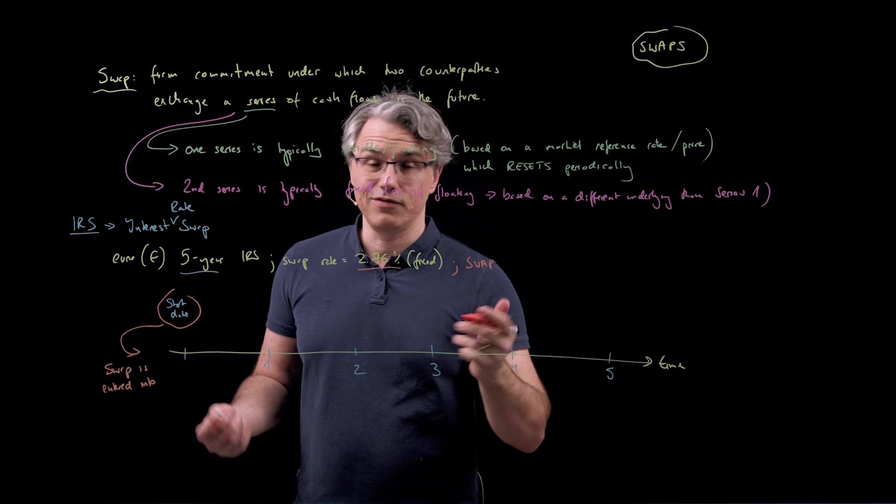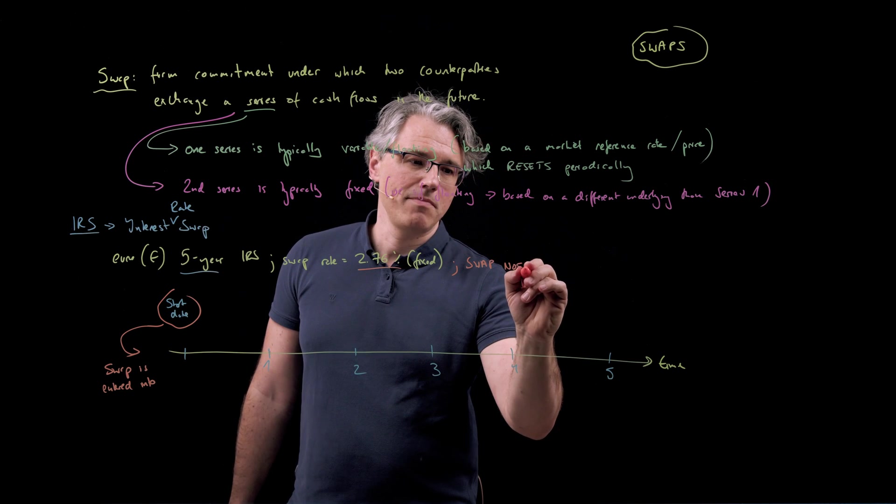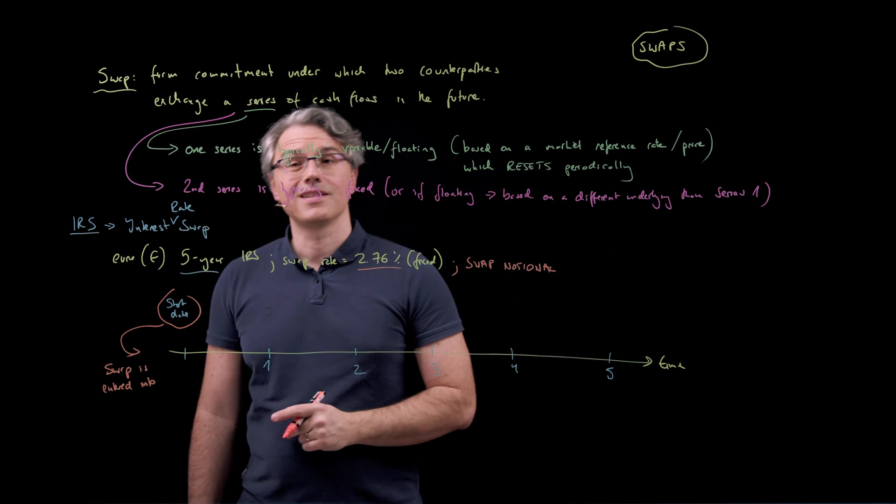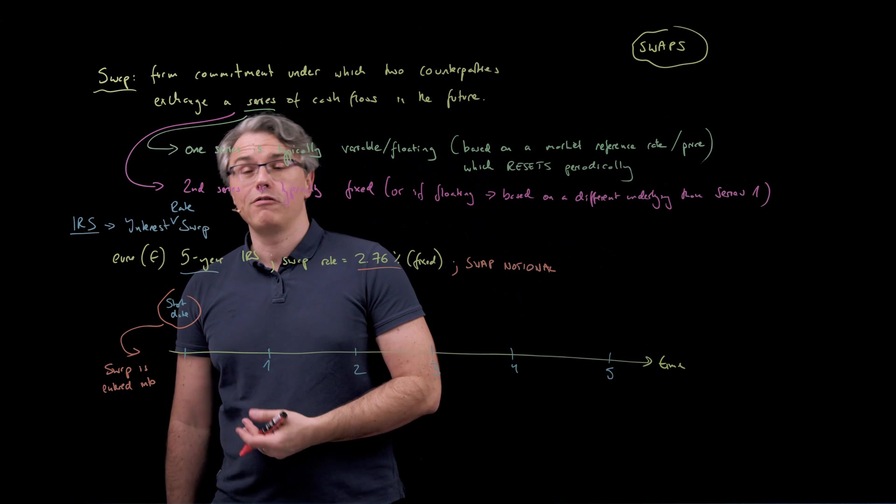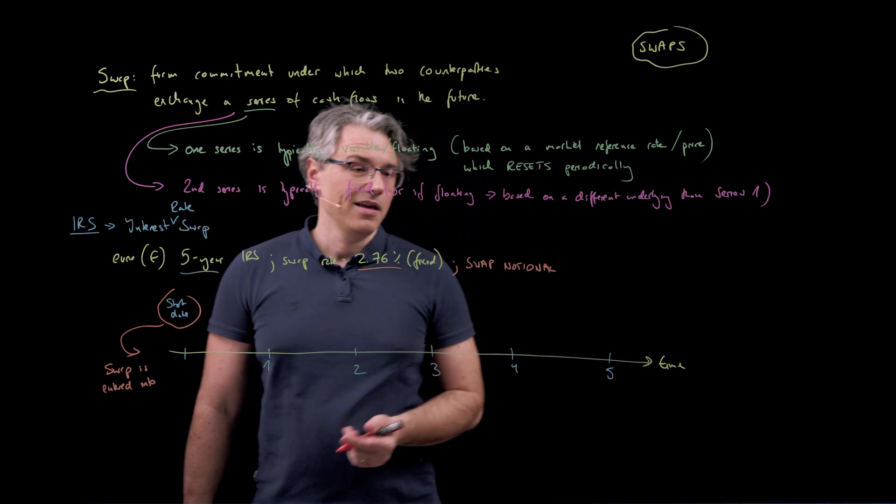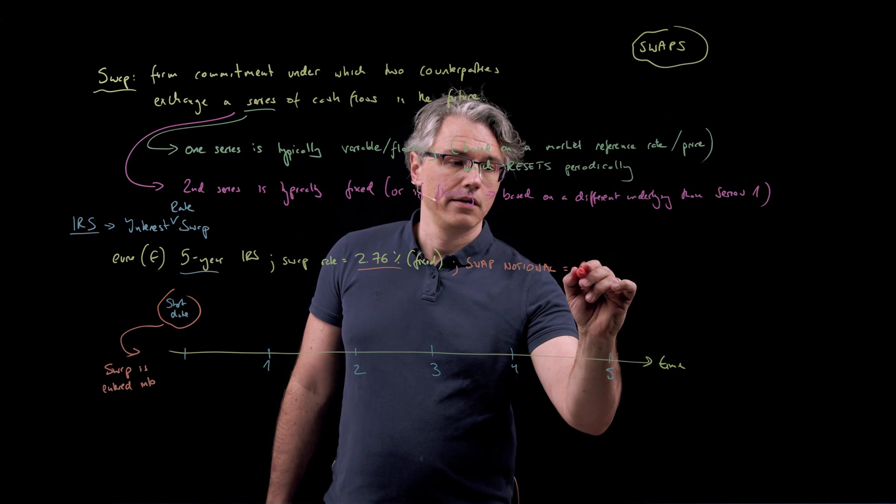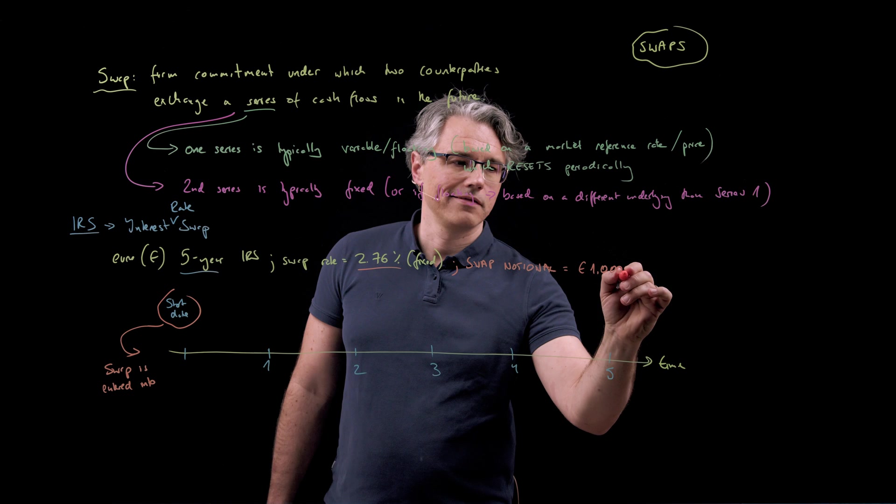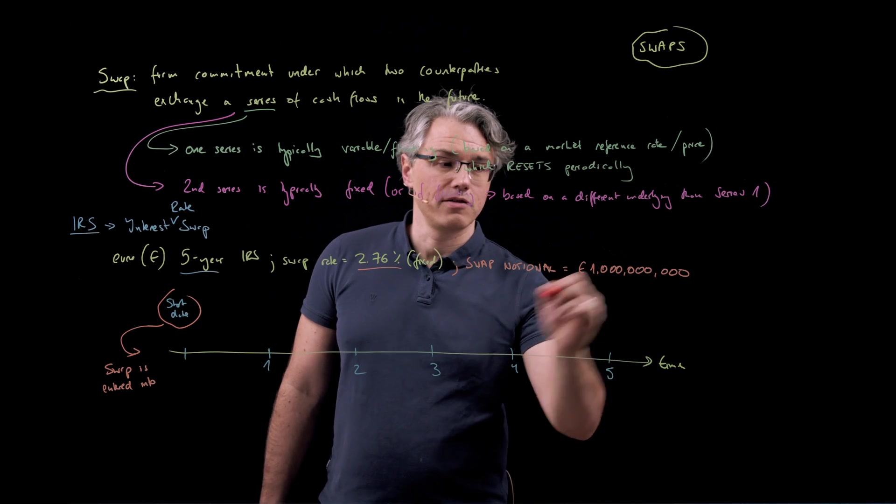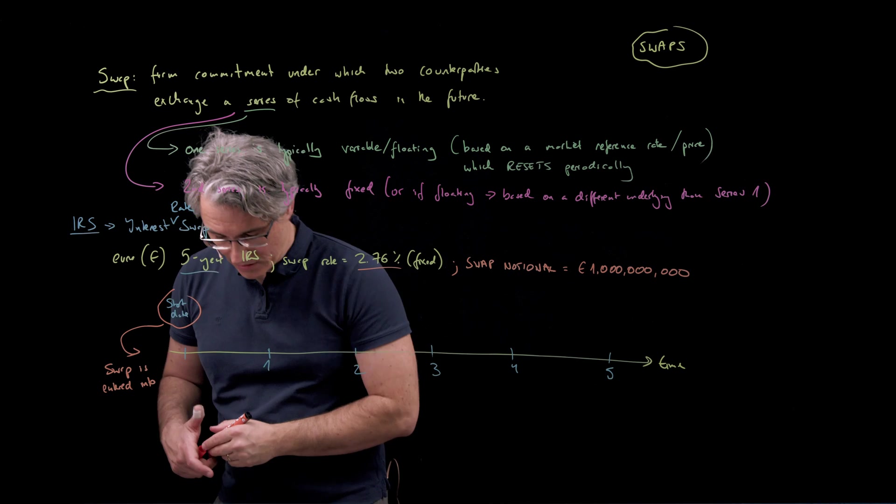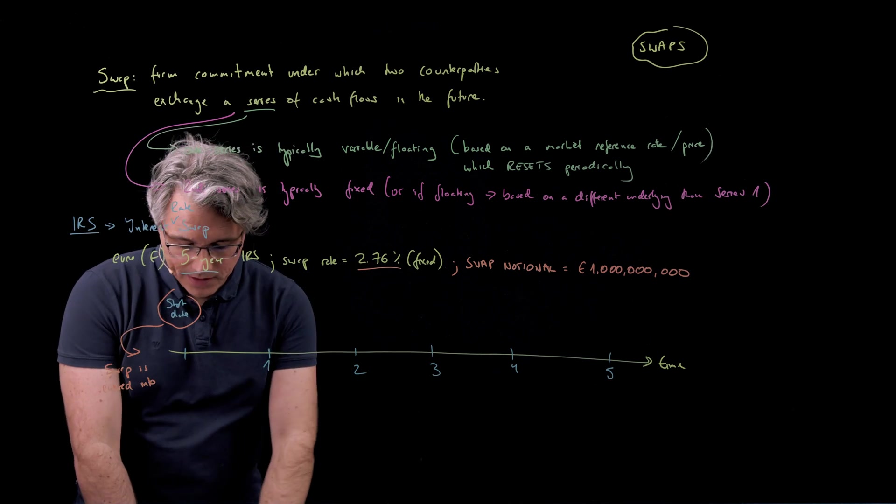That's the size of the contract. Remember, in previous videos, we were talking about things like 10 tonnes of cocoa for a futures contract. Well, here the swap notional could be something like 1 million euros, or maybe, you know, let's add three zeros, 1 billion euros, why not? And what will happen is,